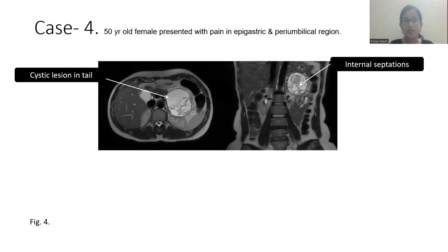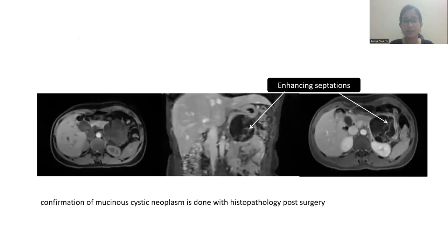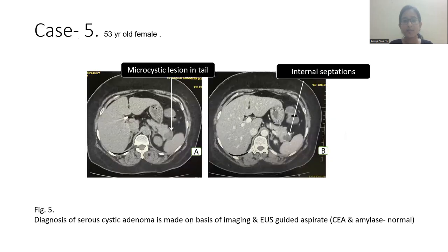Case 4: a 50-year-old female presented with pain in the epigastric and periumbilical region. Here we can see a cystic lesion in the tail with internal septation. Confirmation of mucinous cystic neoplasm was done with histopathology post-surgery.